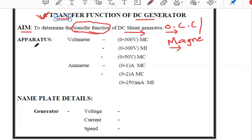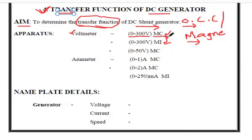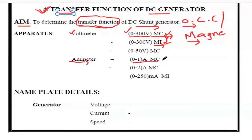For conducting this experiment we require some apparatus. We are going to consider only one voltmeter with a range of 0 to 300 volts, and that is MC type. The difference between MC and MI: MC is used for measuring DC quantities, while MI measures AC quantities. We also require one ammeter with a range of 0 to 1 ampere, also MC type, which is already integrated in the circuit. Since this is a DC experiment, we use only MC meters.